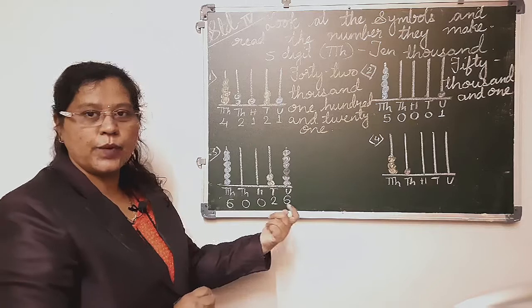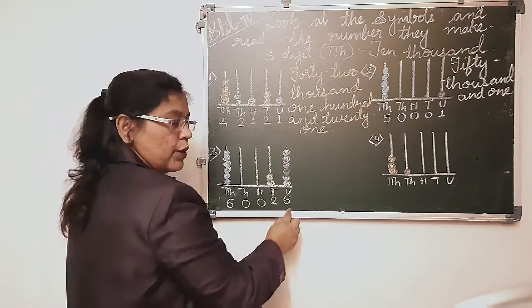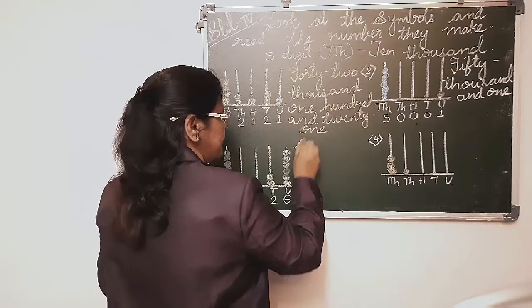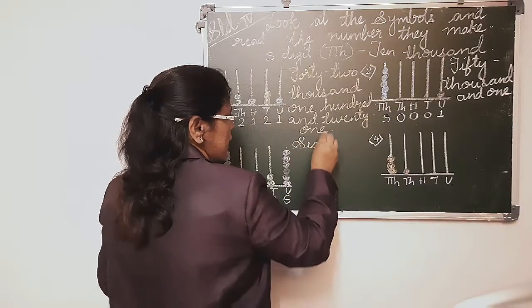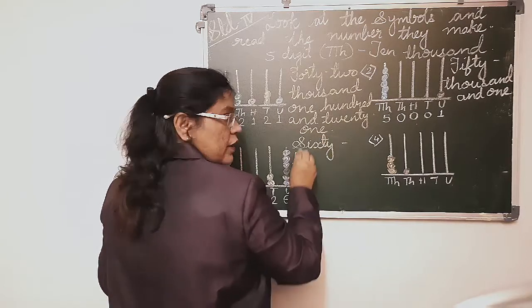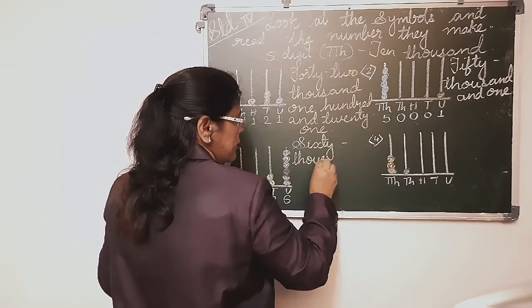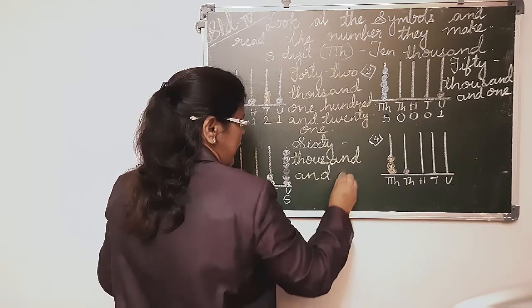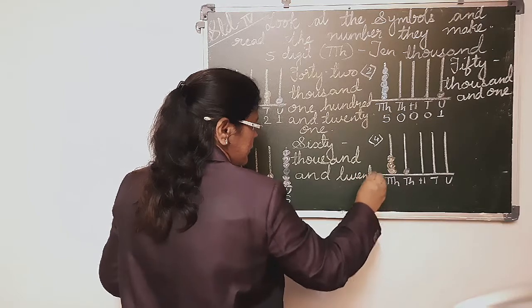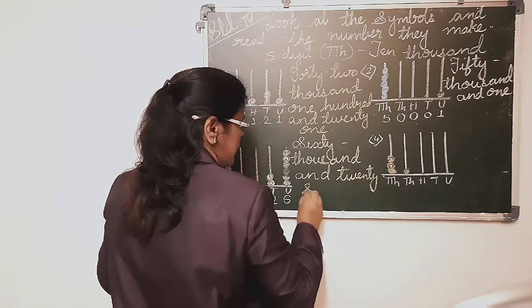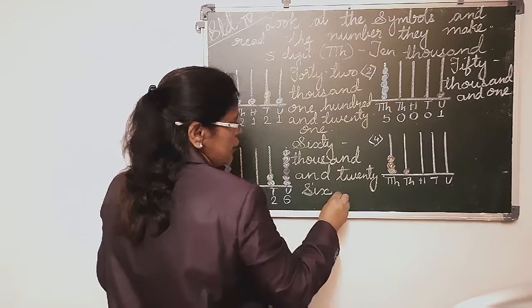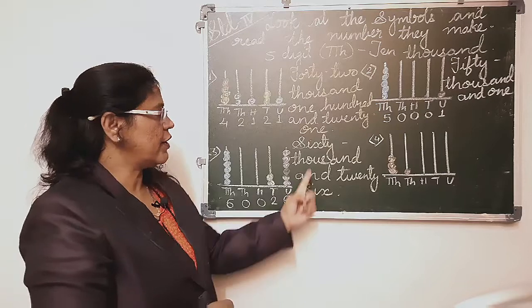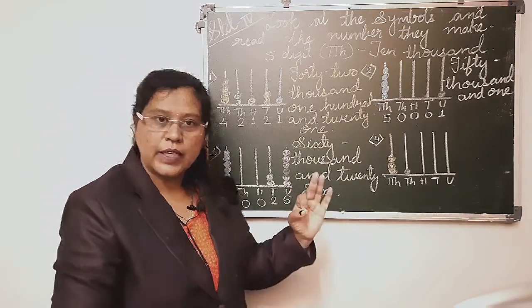The tens and units you have to read together. So it is sixty thousand and twenty-six — 60,026 — because hundreds has no value and thousands has no value. Once again we will read the number: it is 60,026.